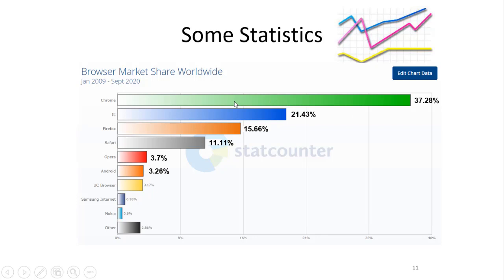In this statistic, we can see how computer clients use the web browser. First is Google Chrome, with a usage percentage of 37.28%. Internet Explorer is at 21.43%, Firefox is at 15.66%, and so on.